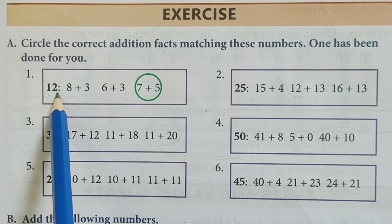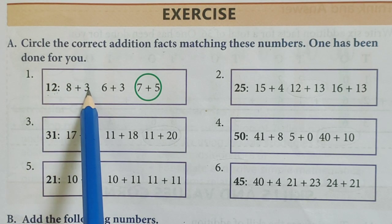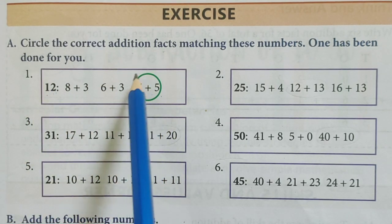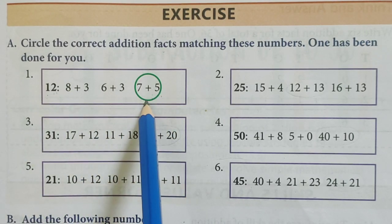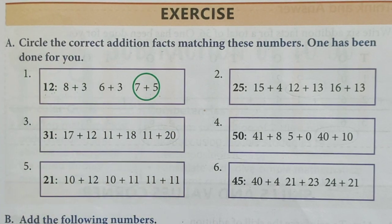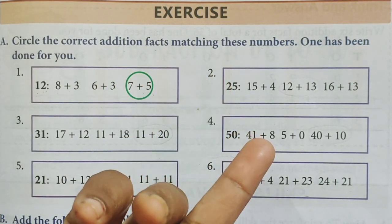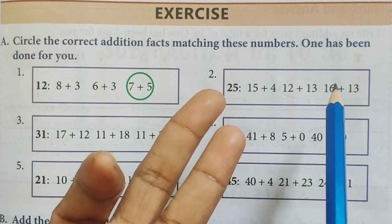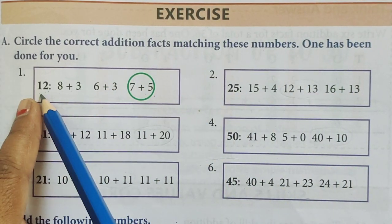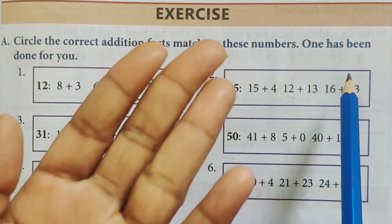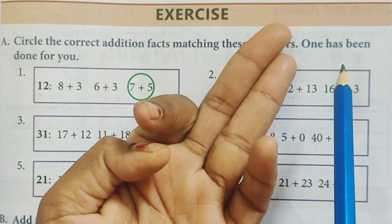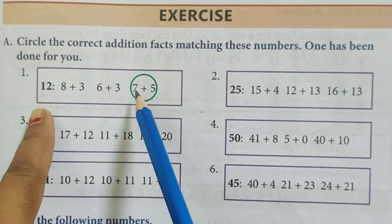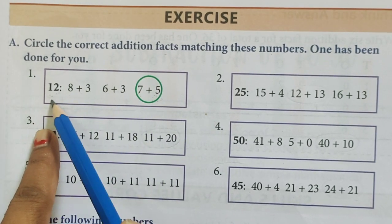The number given is 12. Is 12 the addition of 8 plus 3, or 6 plus 3, or 7 plus 5? Check: 8 plus 3 equals 11 — no. 6 plus 3 equals 9 — no. 7 plus 5: count on from 7 — eight, nine, ten, eleven, twelve — yes! Therefore the answer is 7 plus 5 equals 12. We will circle 7 plus 5.